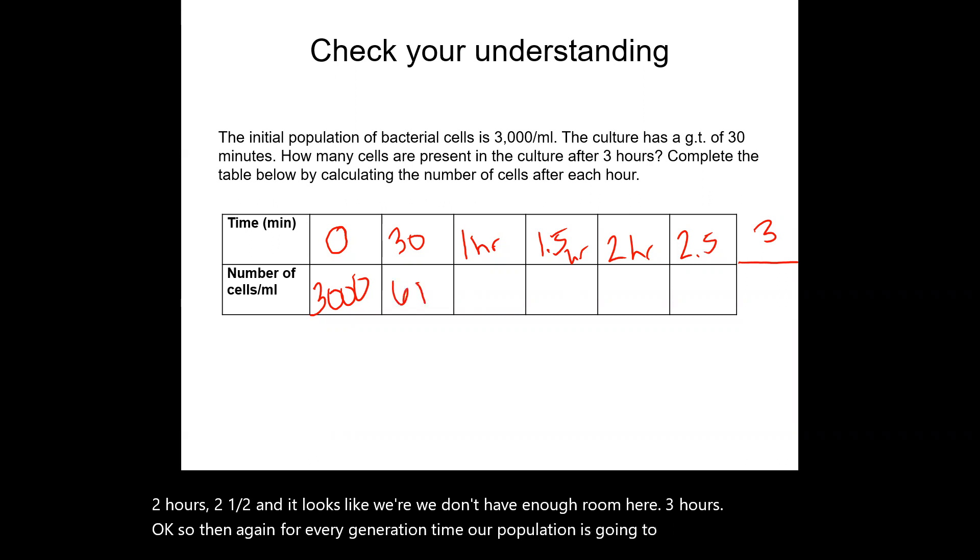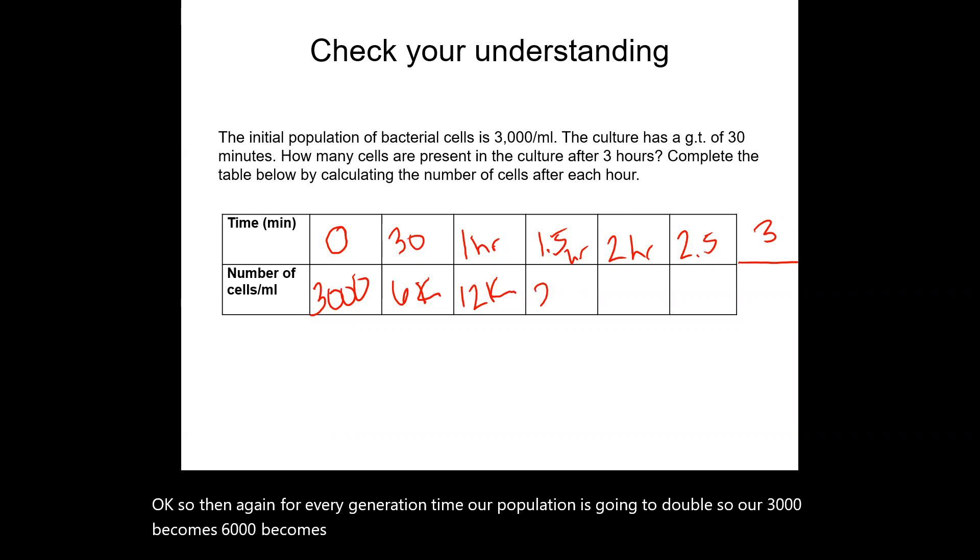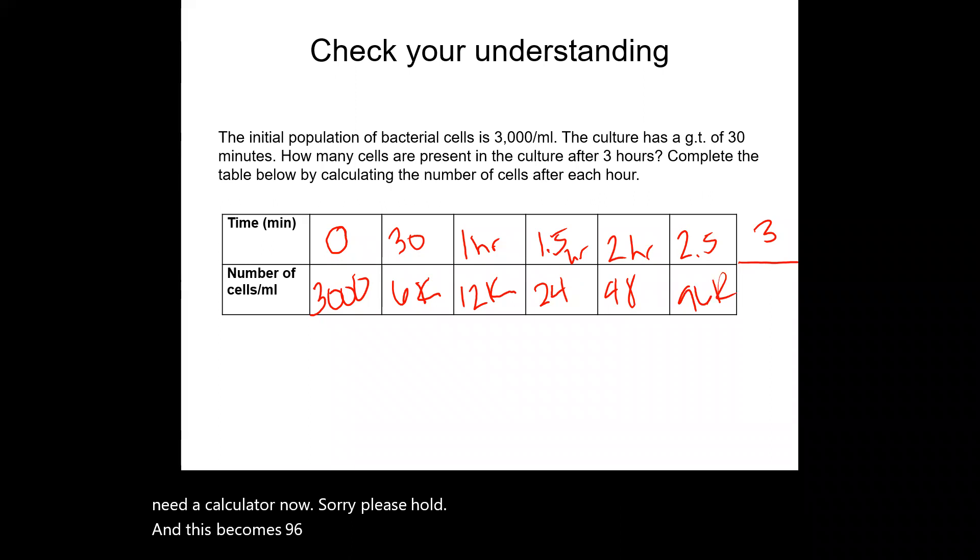So our 3,000 becomes 6,000, which then becomes 12,000, which becomes 24,000, which becomes 48,000. This becomes 96,000, and then that is going to become 192,000 cells per milliliter. That's the end of this video. Let me know if you have any questions.